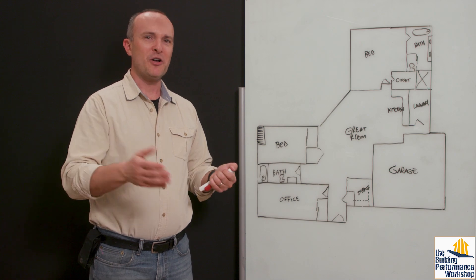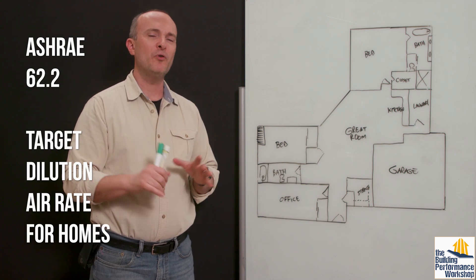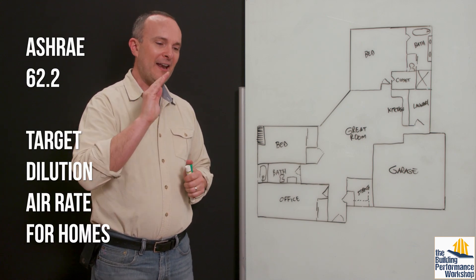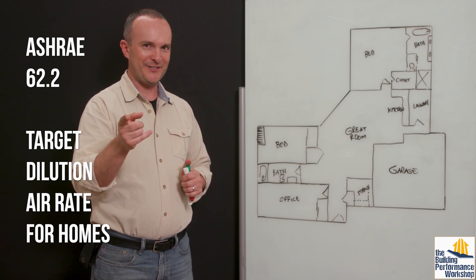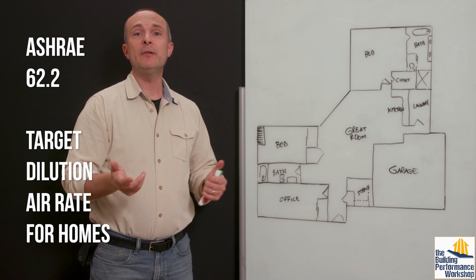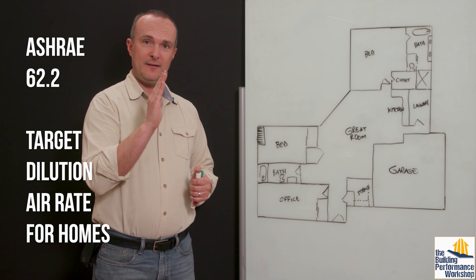Pick a number and then let's just go from there. So ASHRAE 62.2 is a standard that almost everybody, except for the people I just mentioned, agree is a good place to start for target dilution air.